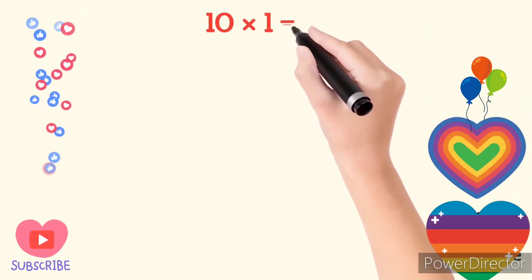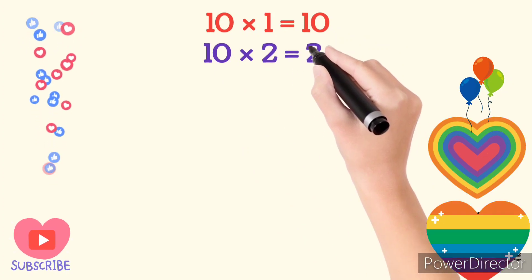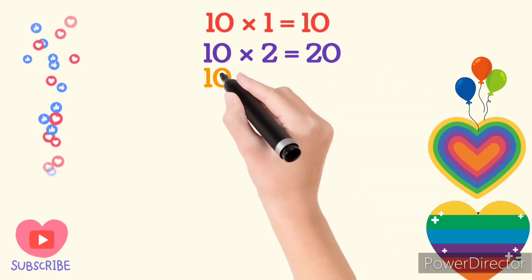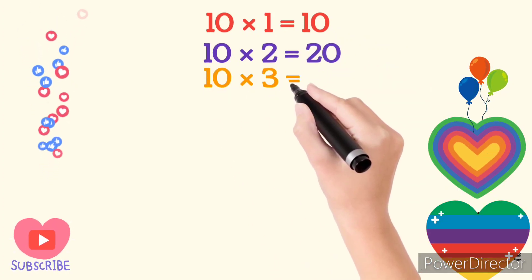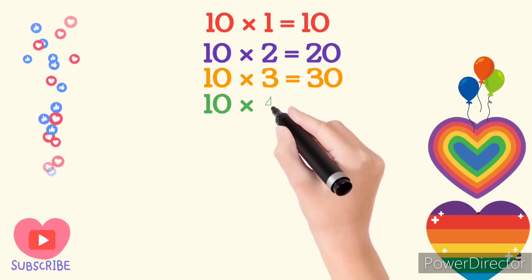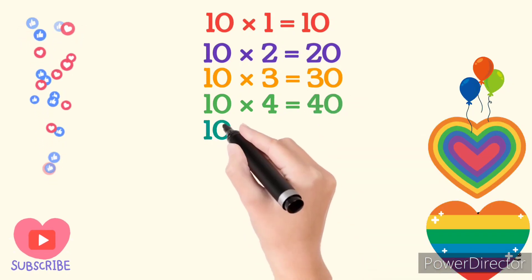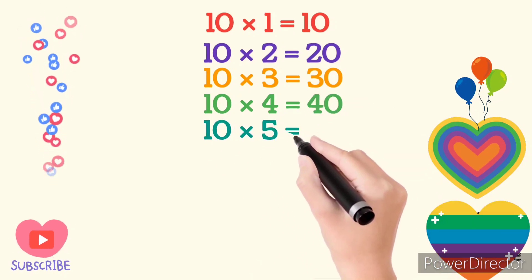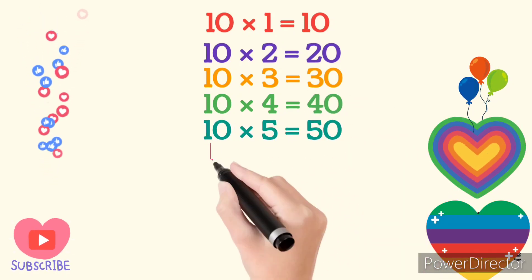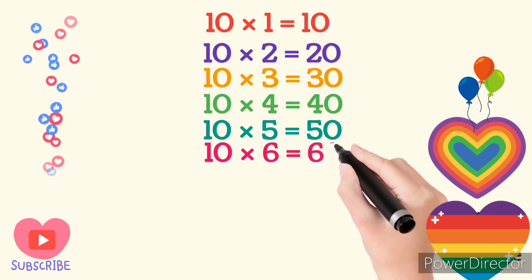10 times 1 are 10. 10 times 2 are 20. 10 times 3 are 30. 10 times 4 are 40. 10 times 5 are 50. 10 times 6 are 60.